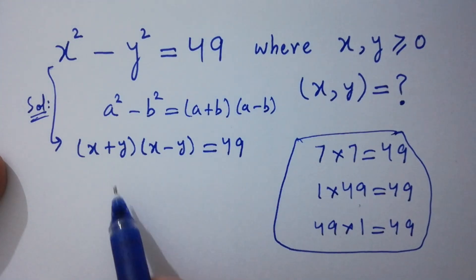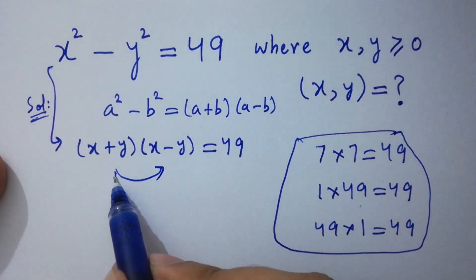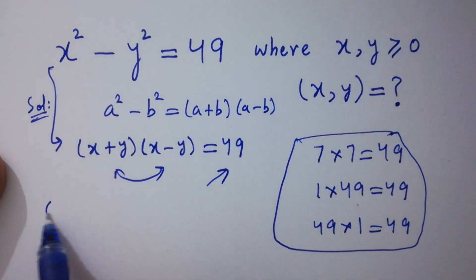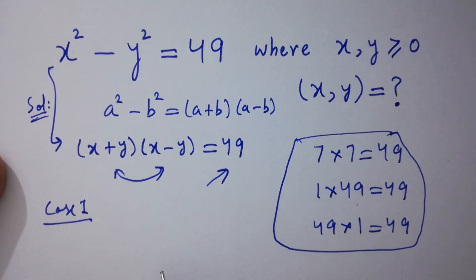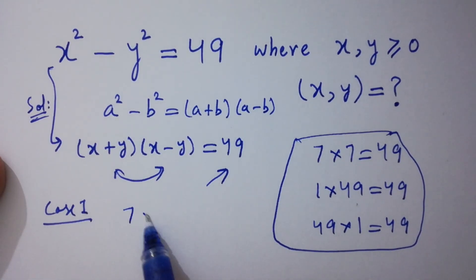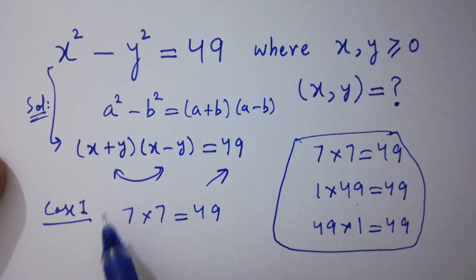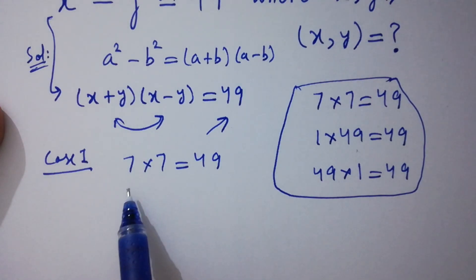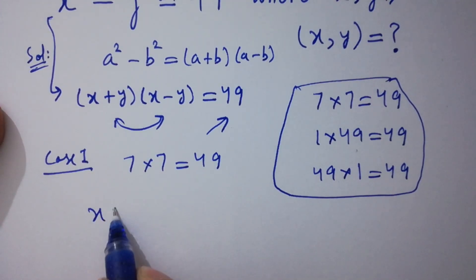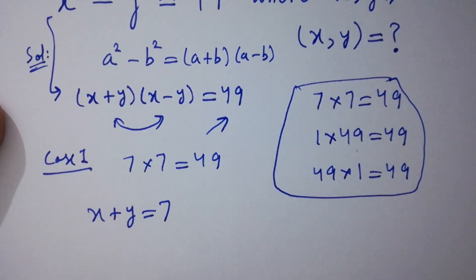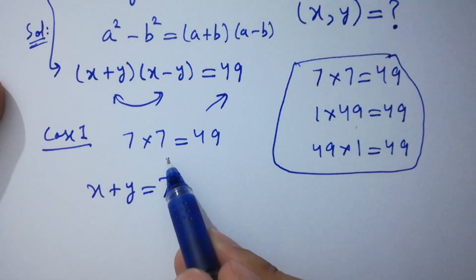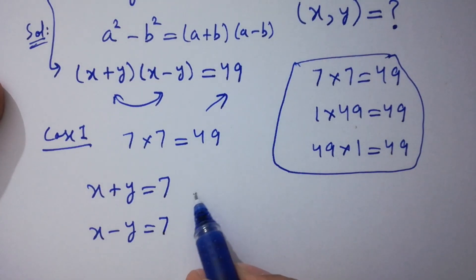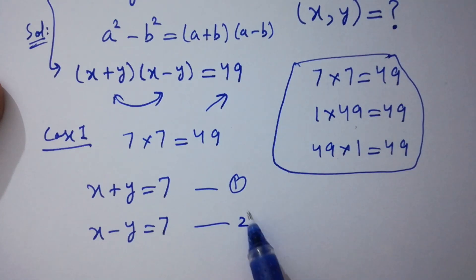By this we get 49. Taking the first case, which is 7 times 7 equal to 49, by comparing we have x plus y equal to 7 as the first equation, and x minus y equal to 7 as the second equation.